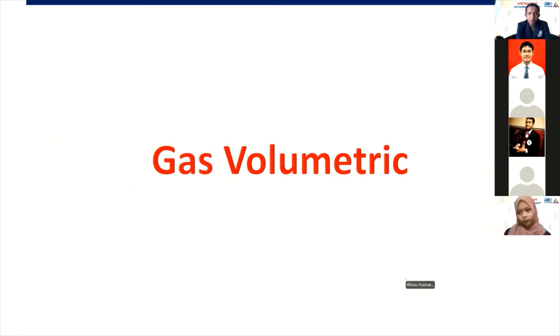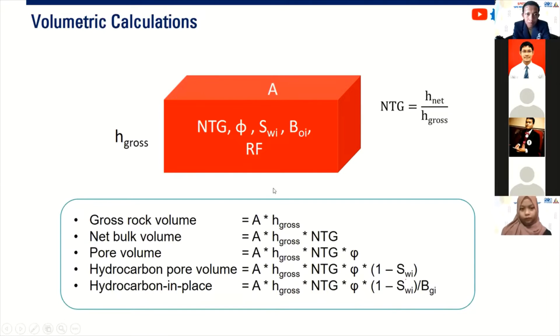We start then with gas volumetric. So this is the conceptual image of our gas reservoir. We know the area, the natural growth, the porosity, the initial water saturation, and then the formation volume factor for gas. I use O here for oil, but I should change it with G. So BGI, and then recovery factor.